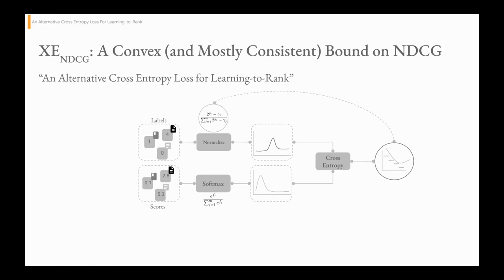In this work, we extend that framework to include the more general setup where we have graded relevance. It turns out that if labels are normalized using this function, which utilizes a term that resembles the gain function in NDCG, then the resulting loss function is actually a bound on NDCG in this more general setup.